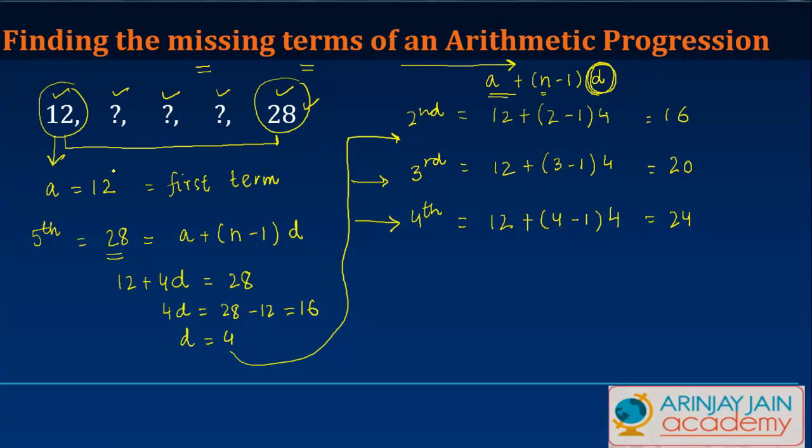And that is how you find out the missing terms of an arithmetic progression. Because to find these missing terms what we need to know is the first term and the common difference. Once we know the common difference, it's easy.